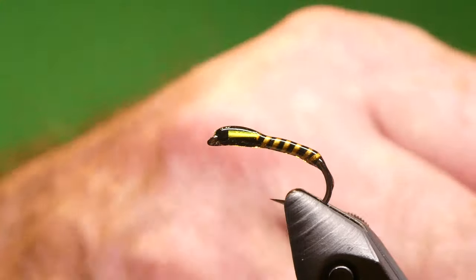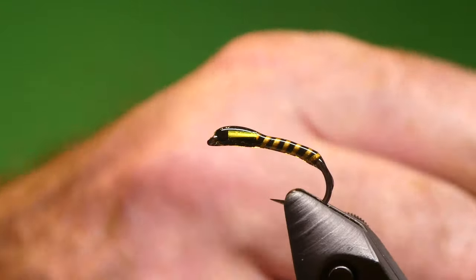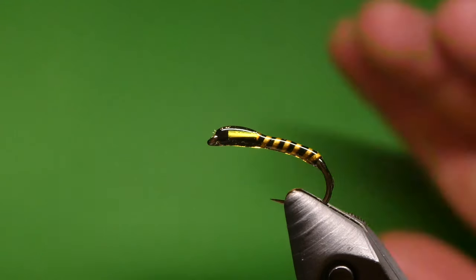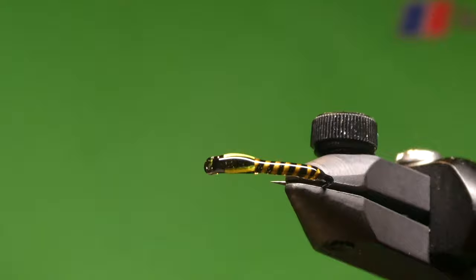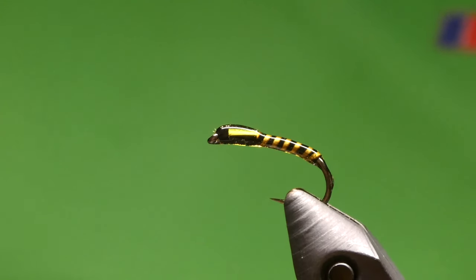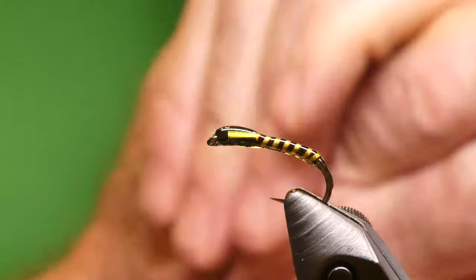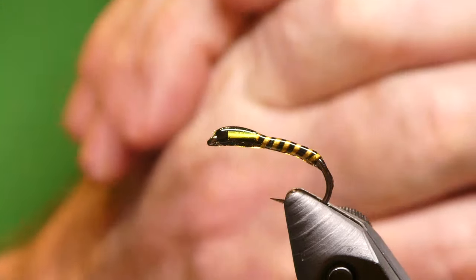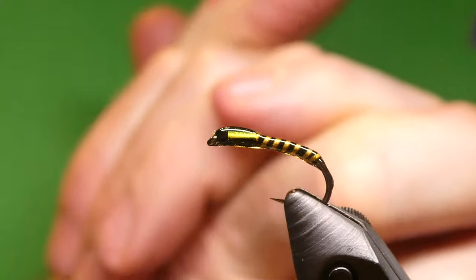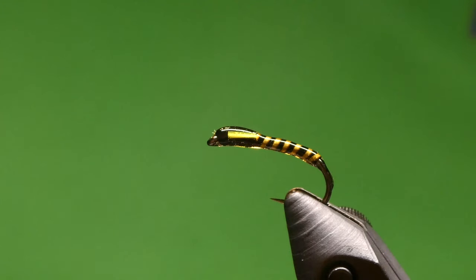So guys, that's it. That's the black olive buzzer. Works really well everywhere. Tie them in tens and twelves, whatever. But I hope you enjoyed that one. That's a good one for the box. If you like what you're seeing, please subscribe to the channel and give it a thumbs up. Cheers, thank you.